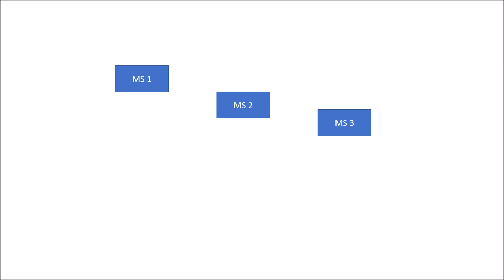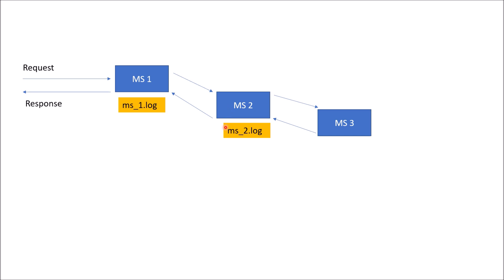Now let's assume that we have three microservices — microservice1, microservice2, and microservice3. A request is coming to microservice1 and it is spanning over microservice2 and microservice3, and after processing the response is returned back. The logs of microservice1 are stored in ms1.log, for microservice2 we have ms2.log, and for microservice3 we have ms3.log.